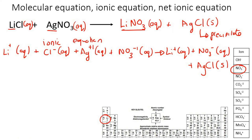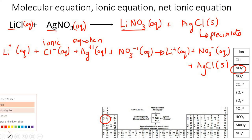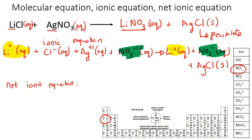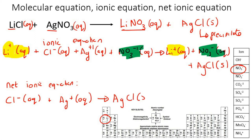For the net ionic equation, you cancel everything that is the same on both sides. Li⁺ appears on both sides — cancel. NO3⁻ appears on both sides — cancel. What remains is: Cl⁻ aqueous plus Ag⁺ aqueous gives AgCl solid. That is your net ionic equation.